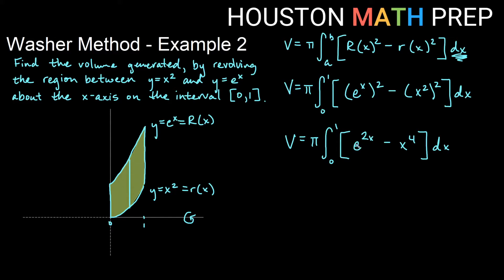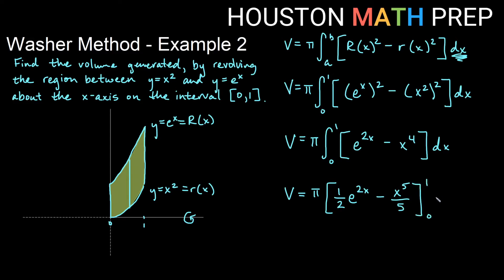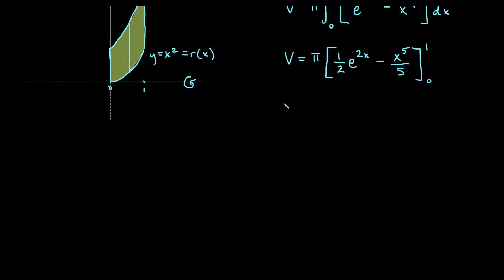Now we integrate. The e to the 2x term is exponential and x to the 4th is a polynomial handled by the power rule. Integrating e to the 2x gives e to the 2x times one half — since the derivative would bring out a 2, the antiderivative brings out one half. Integrating x to the 4th gives x to the 5th over 5. We then evaluate at the bounds 0 and 1.